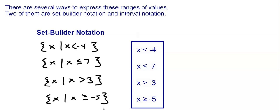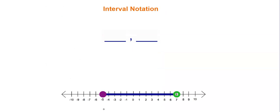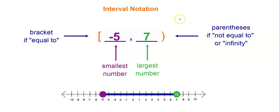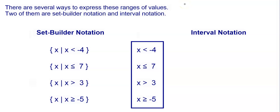A second way of writing inequalities is interval notation. With interval notation you have two numbers separated by a comma — the smallest number in your interval first and the largest second. If it's a closed circle or equal to, you write a bracket next to that number. If it's an open circle, you use a parenthesis — parenthesis means not equal to. Infinity always gets a parenthesis because you can't equal infinity.